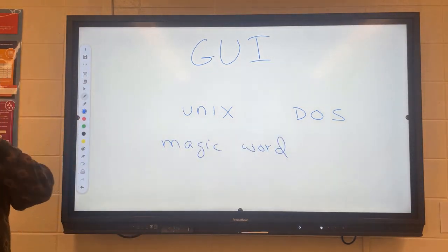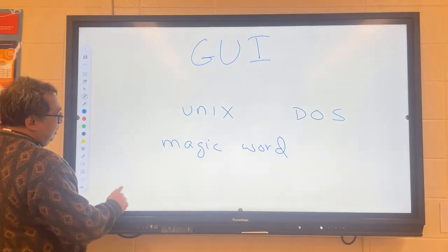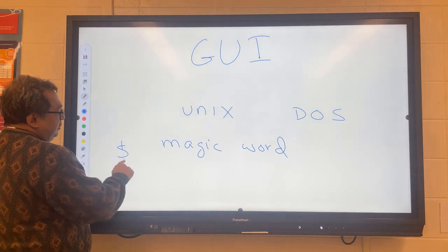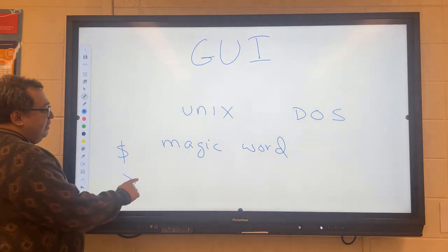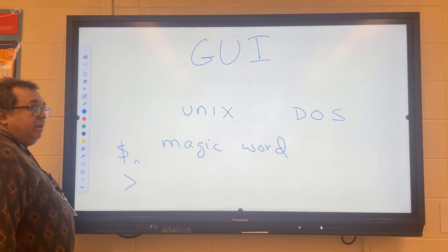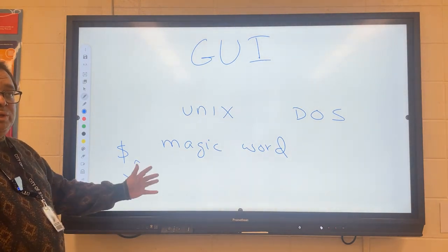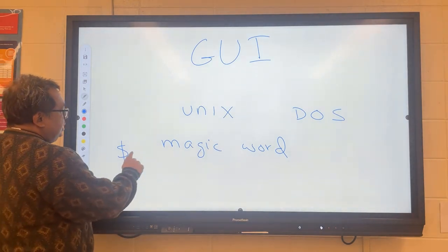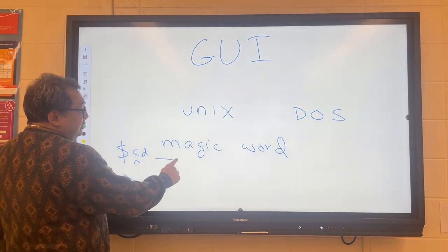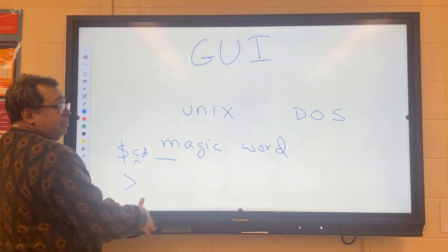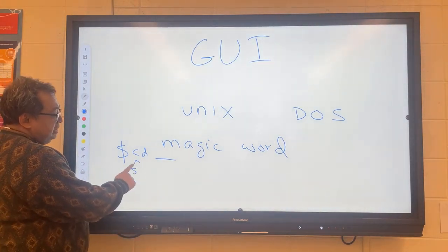Magic word operating systems basically meant that when you turn the computer on, there was a prompt — this one for Unix and this one for DOS — and the cursor would be right there. You just type in what you wanted the computer to do. If you wanted to switch to a different directory, you would go CD — that meant change directory — give it the name of the directory, hit enter, it would go there, and present you with another dollar sign prompt.